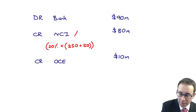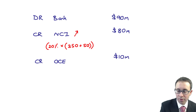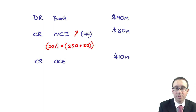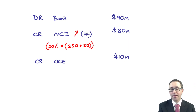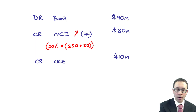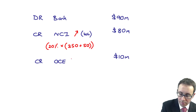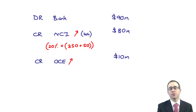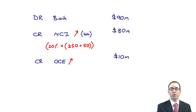So you're crediting your NCI — you're increasing the NCI effectively. That's going to be through working number four. And then you credit your other components of equity. That's increasing your other components of equity through whatever working you have used for other components of equity — usually it goes straight after group retained earnings, so into working number six.